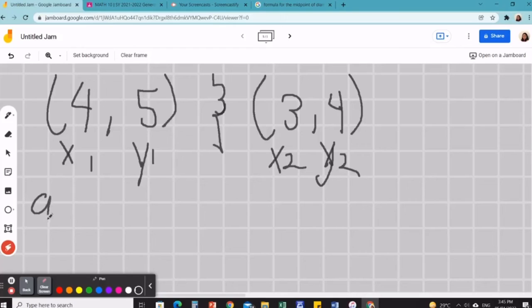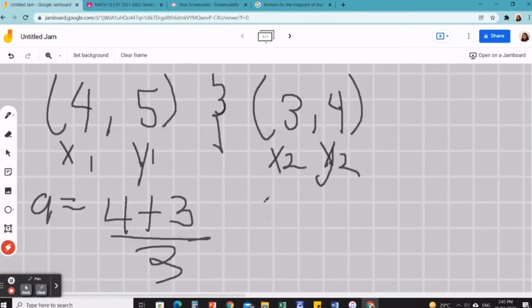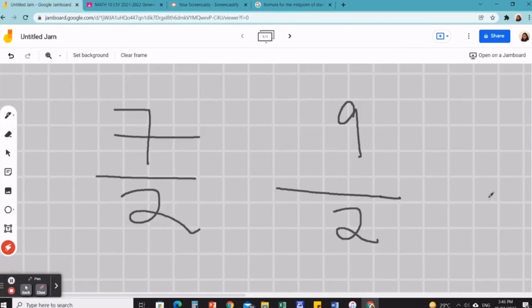Okay, and substitute a is equal to 4 plus 3 over 2. And b is equal to 5 plus 4 over 2.